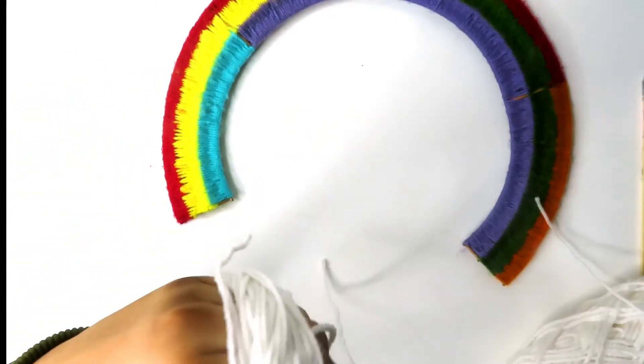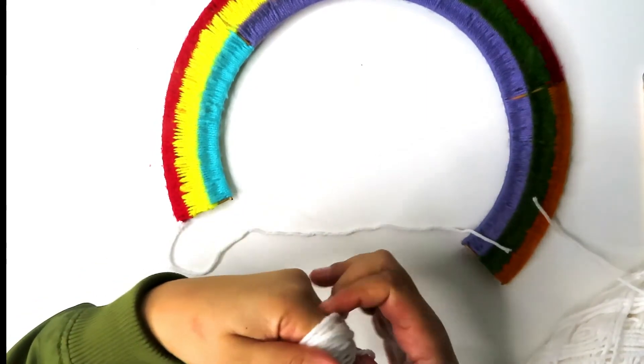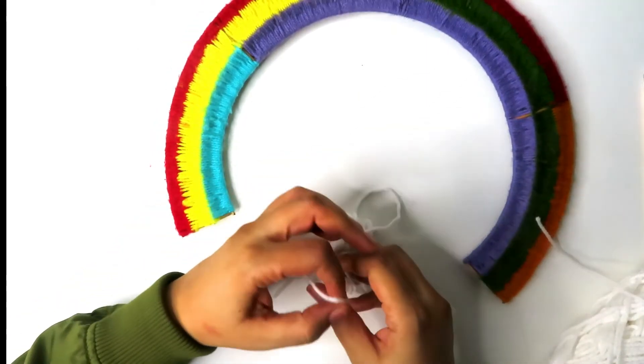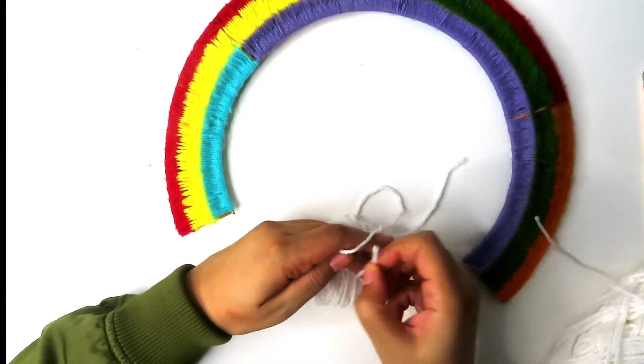Slide the yarn off your hand keeping it in the same circle shape. Use the 12 inch string to tie a double knot around the loops of yarn.